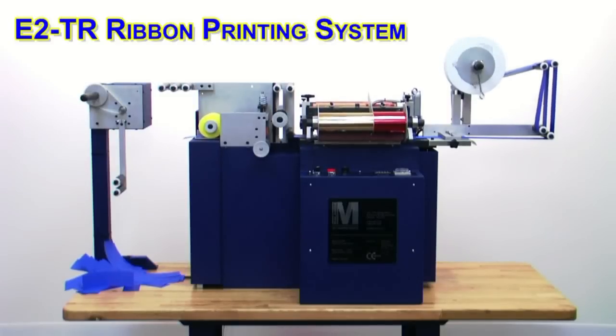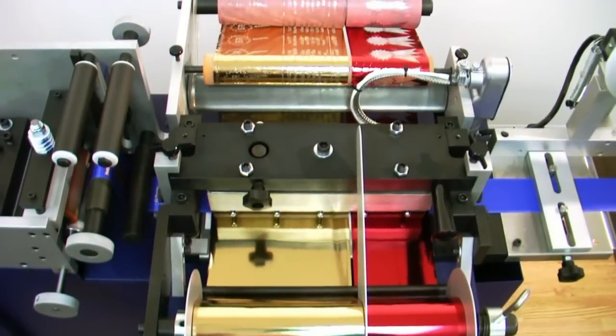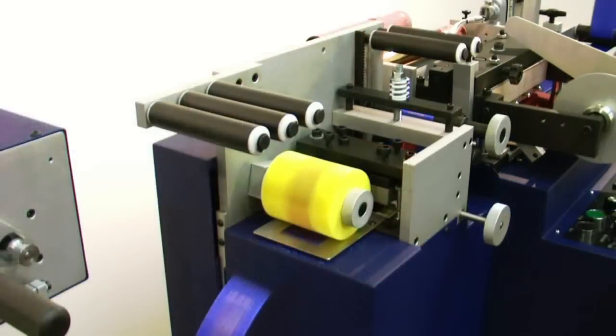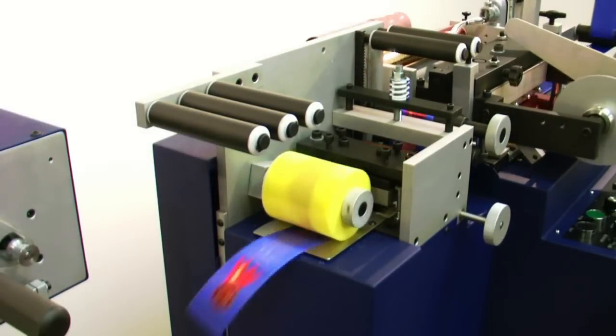The E2 is equally adept at short-run personalization or industrial volume printing jobs. Delivering 5 tons of printing pressure over a 3 by 10 inch print area, the E2 is able to imprint dazzling single or multi-color hot stamps in up to 3 colors.